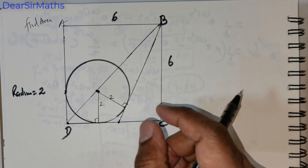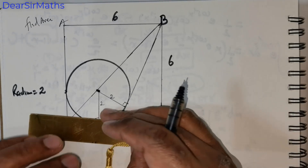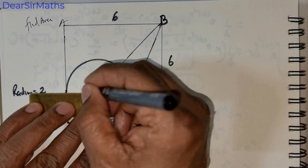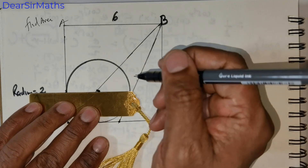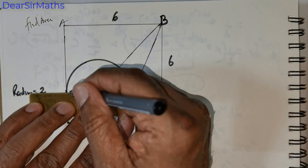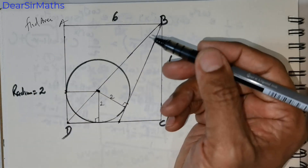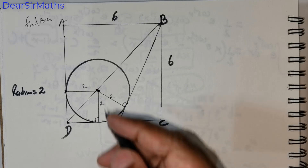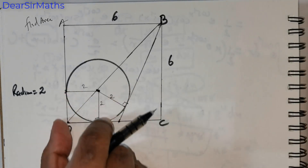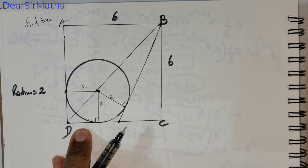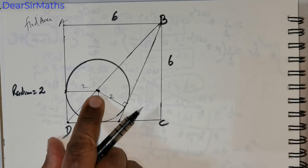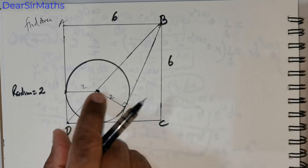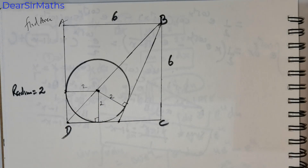What we need to do is connect this from the center to the tangent, and that would actually become a square. Why do I say it's a square? Because this is 2 units, this is 2 units, and if I bring this down, this is also 2 units. This side is actually parallel, so this is 2 units. All of these sides are going to be 2 units.